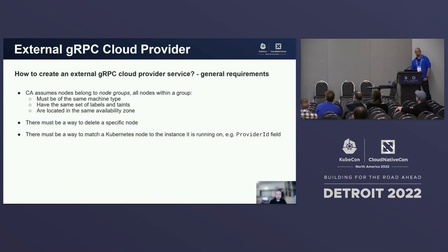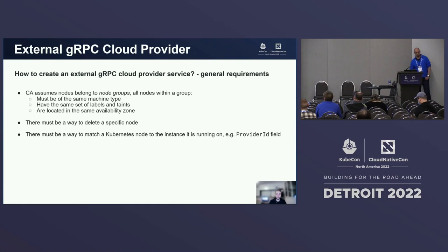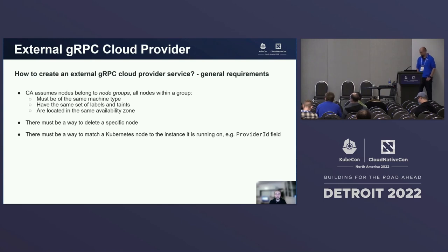Now we have a pluggable system — let's talk about what you need to do to create a new cloud provider using it. In the Cluster Autoscaler there is a concept of node groups. To scale, the CA works with groups, not single nodes. When it needs to add nodes, the CA chooses a group to scale up. It is important that all nodes within a group have the same machine type, same labels, same taints, and are in the same availability zone for the CA to properly decide which group to use.